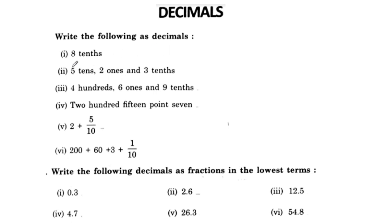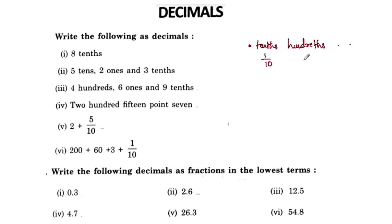Let's write the following as decimals. Tens, hundreds, thousands. Tens is 1 by 10. Hundreds is 1 by 100. Thousands is 1 by 1,000.